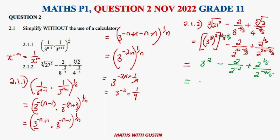Now we have 9. For the division: when bases are the same and you are dividing, you subtract the exponents. For example, b over b squared gives b to the power of 1 minus 2. The same applies here — we have 2 to the power of 1 over 5, and dividing by 2 to the power of negative 4 over 5 means subtracting: 1 over 5 minus negative 4 over 5. Since the calculator is not allowed, be careful with the signs.